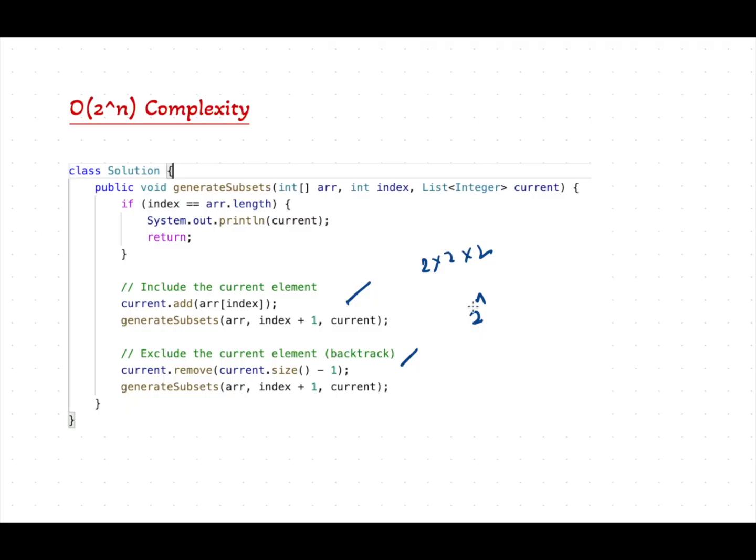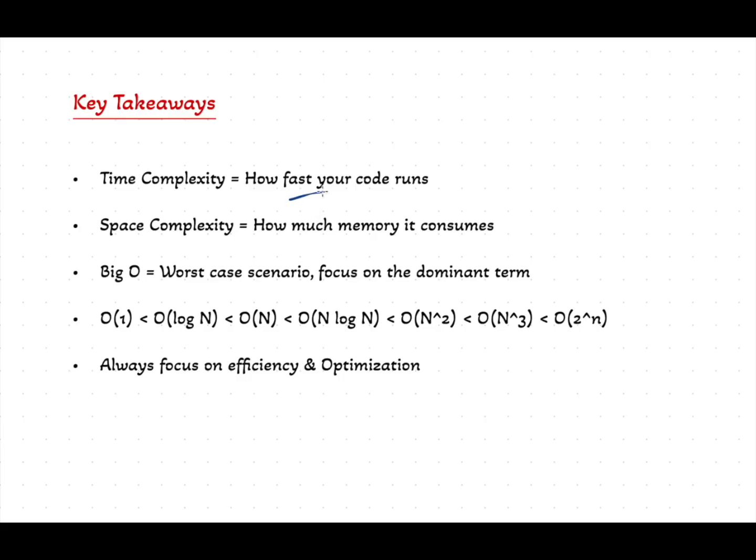Here are the key takeaways. Time complexity means how fast your code runs. Space complexity means how much memory it takes. We usually measure it based on the input size. Big O means worst case scenario. You just have to focus on the dominant term. This is the order of the some common time complexities. And we have to always think about efficiency. So instead of going for bigger time complexities, we have to optimize the code for smaller time complexities.